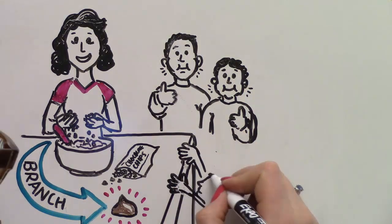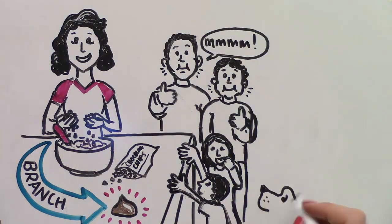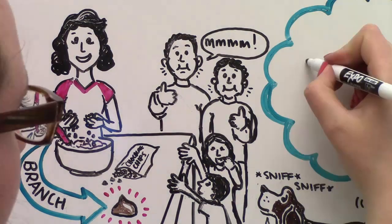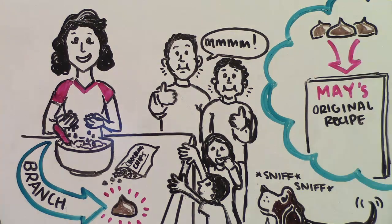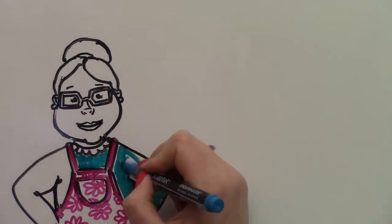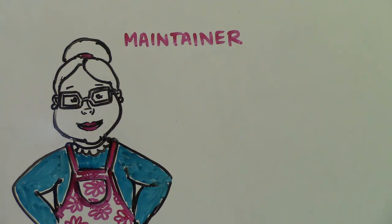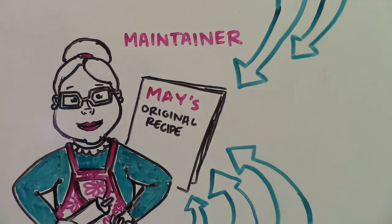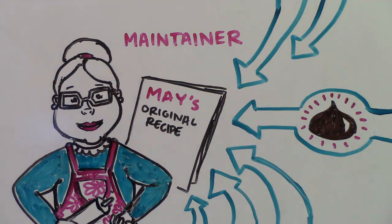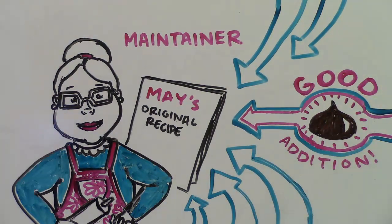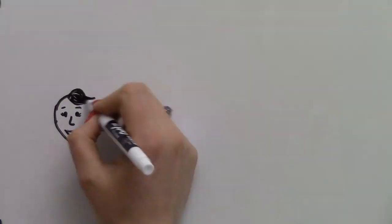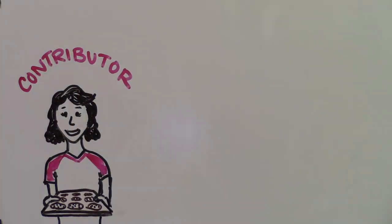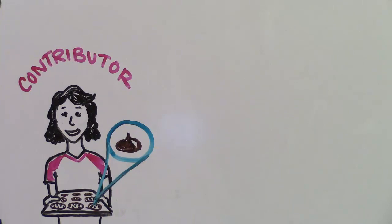Aunt Maria's change was such a great success that she asked Grandma May to add chocolate chips to her original recipe. At this point, Grandma May needs to begin acting as a maintainer, looking after the integrity of the original recipe and deciding which changes she will incorporate. Grandma May agreed that the chocolate chips were a good addition, so from then on her recipe included chocolate chips. Aunt Maria is now a contributor because she has contributed something to the recipe.